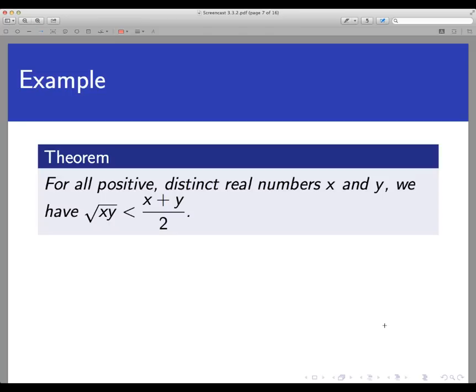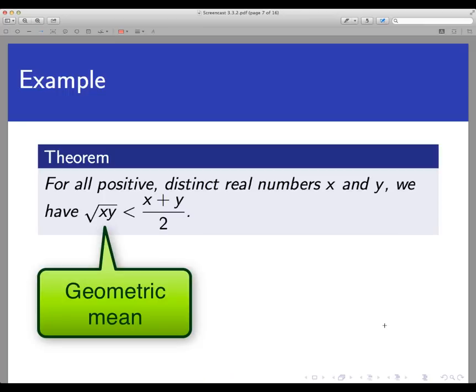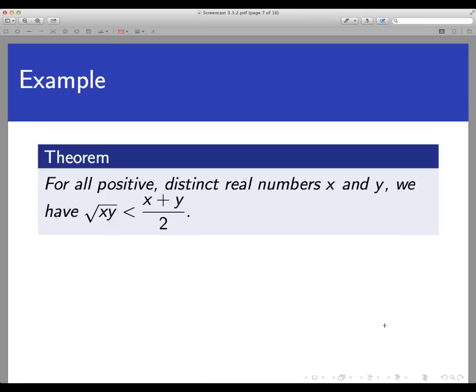Just for your information, the two quantities here are two different kinds of averages. The quantity on the right is the regular average, or what's called the arithmetic mean of X and Y. The quantity on the left is called the geometric mean of X and Y. Both of these kinds of averages show up in different places in mathematics, and this theorem says that the geometric mean is always less than the arithmetic mean.